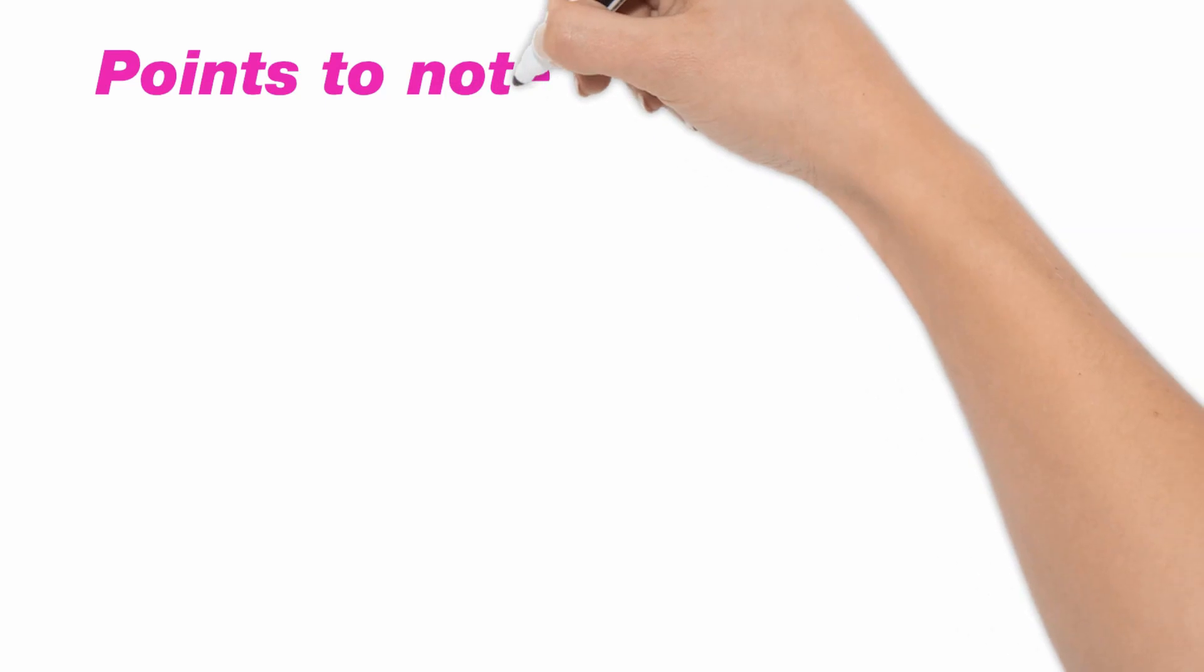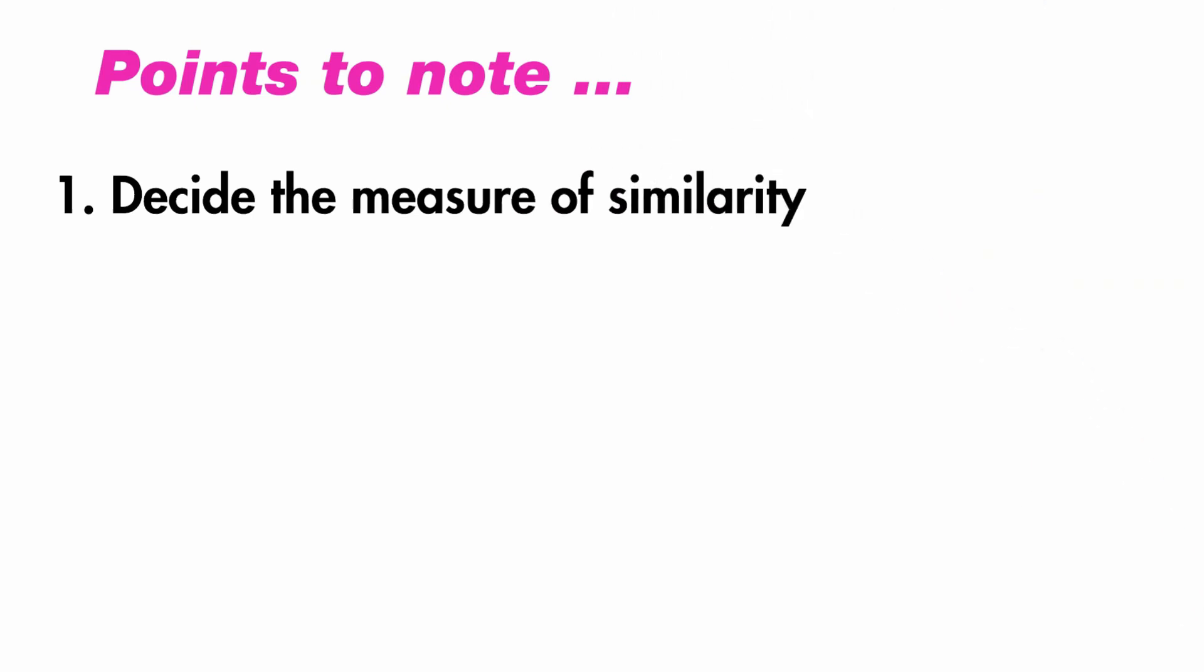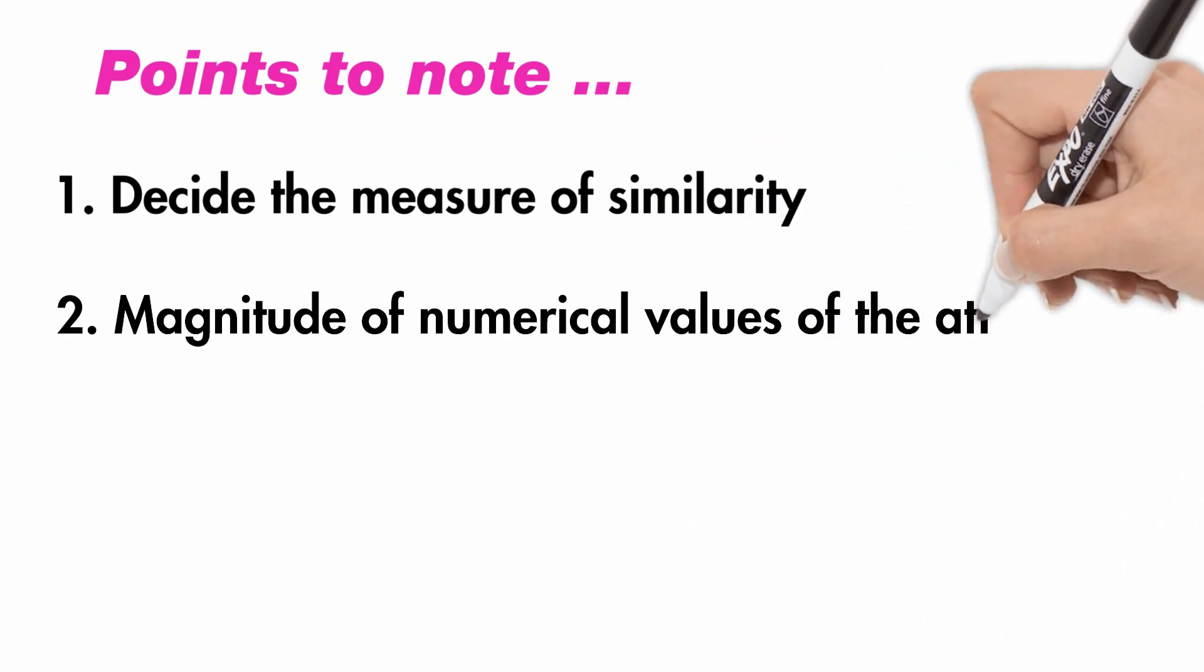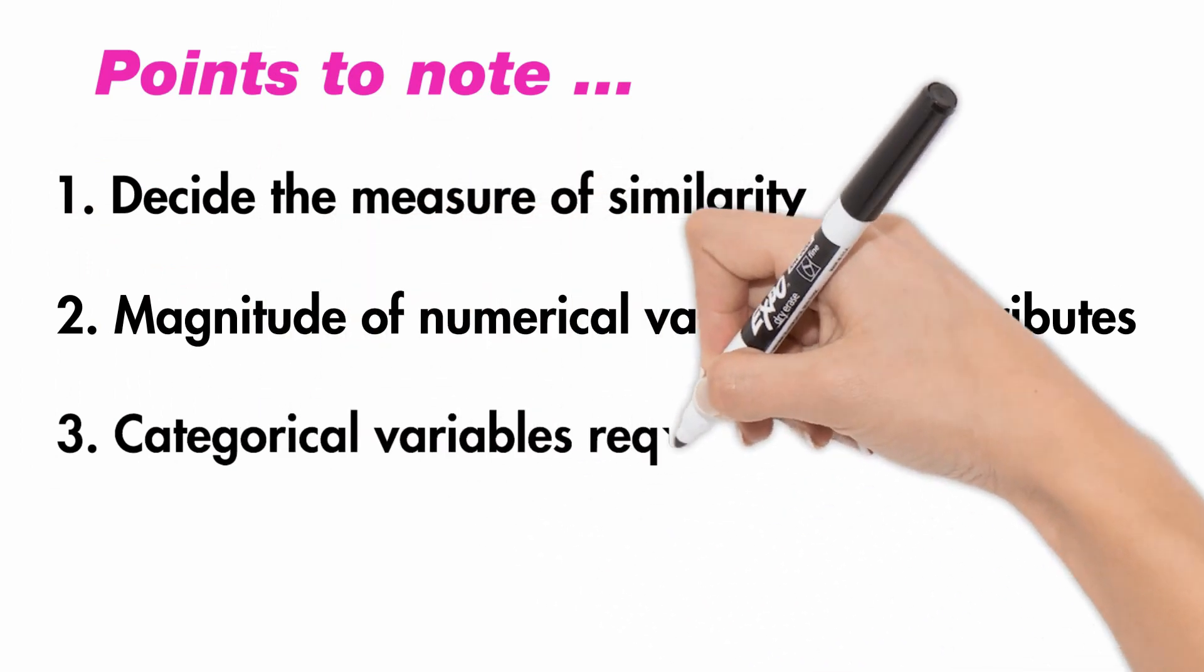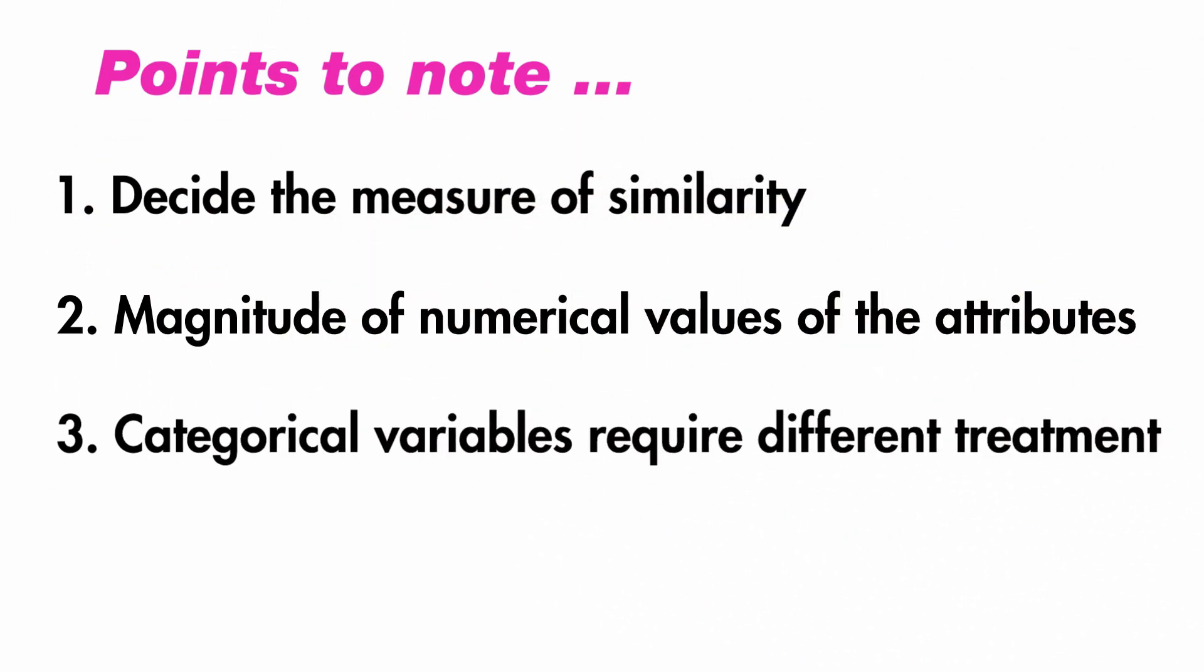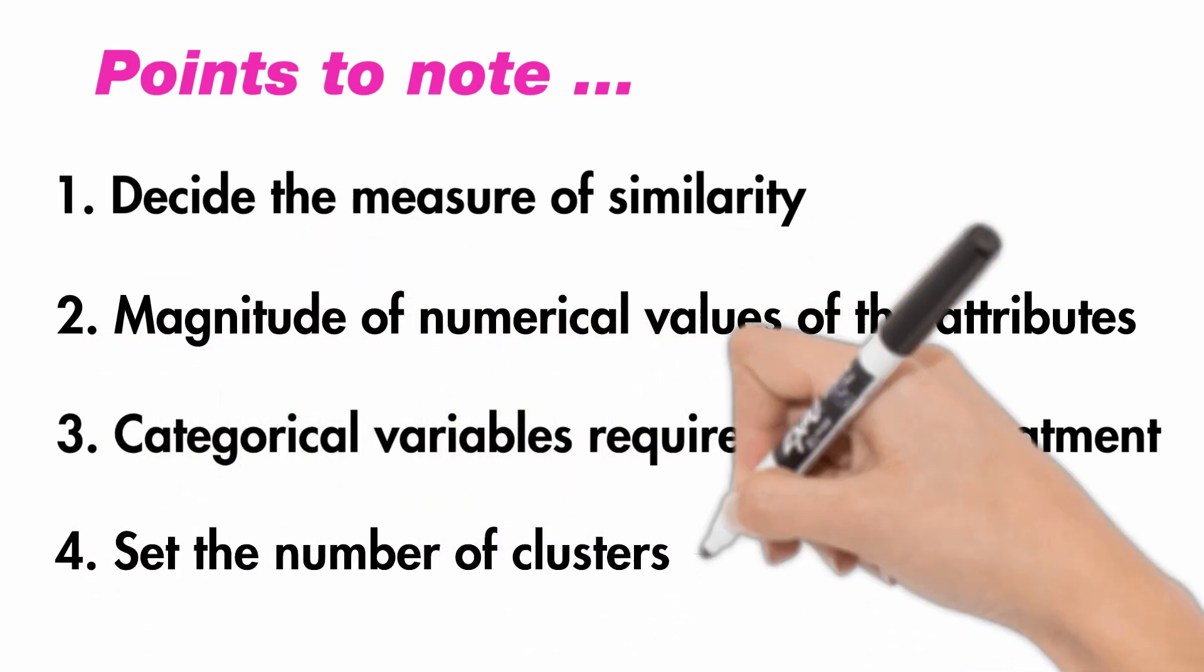Finally, before we run the cluster analysis, there are a few points that need due consideration. First, we decide on the distance measure or metric that we plan to use; each of them has their merits. Second, the magnitude of the numerical values can mess up the calculation, hence we need to run a z-transformation or normalization on the values before we can put them to use in the algorithm. Thirdly, categorical variables with binary or other values need a separate treatment before we use them. And finally, we need to start by a guesstimation of the number of clusters we expect to emerge. The final set of clusters is arrived iteratively.